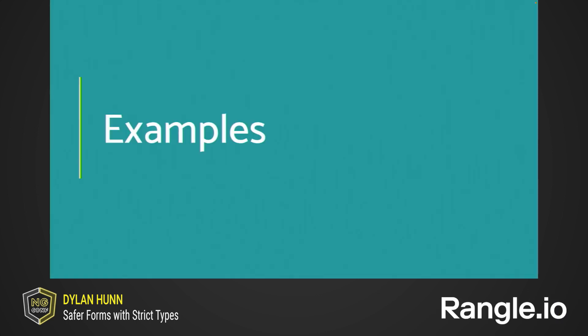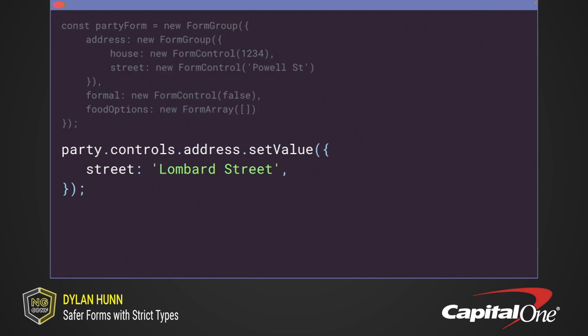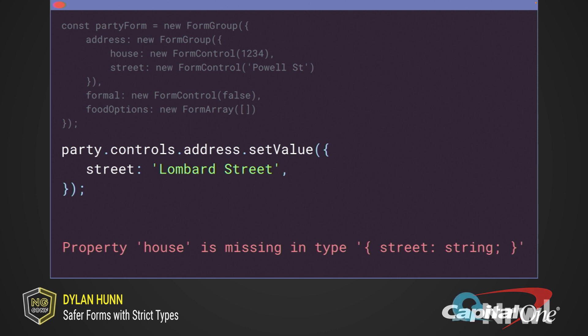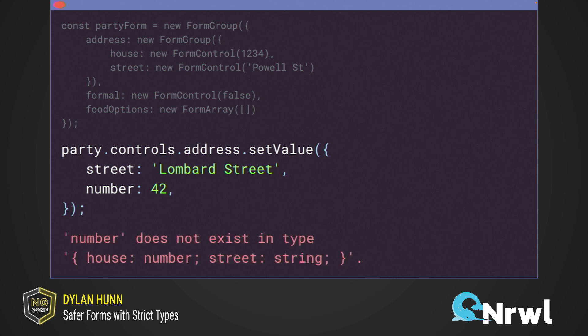Before we get into the nitty gritty, let's see a couple examples of the kinds of errors these types can prevent. Here is the same reactive form from earlier, and we're trying to call set value on it. But since we're missing a key for house, we now get a compile time error — it tells us the property house is missing from the expected object. If we add a key but the name is incorrect — using number instead of house — again, this is a compile time error.